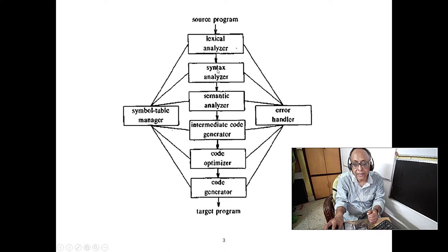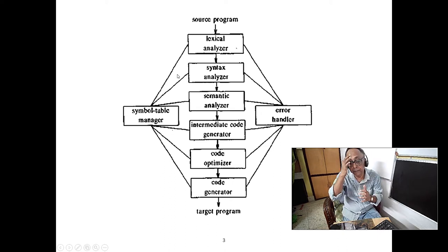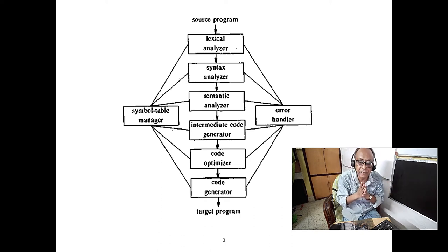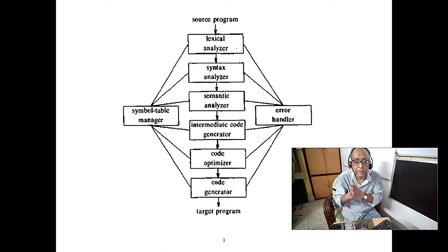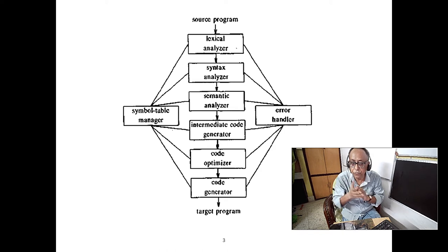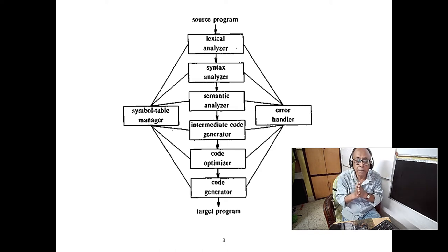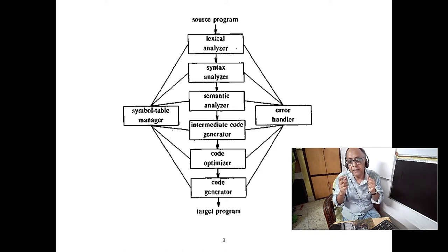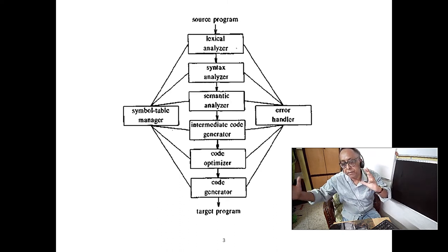After lexical analysis, we check the tokens using our parser. All programming language grammars are basically deterministic context-free grammars. Why? Because a regular grammar is fine for basic pattern matching, but it cannot handle functions or match opening and closing parentheses.